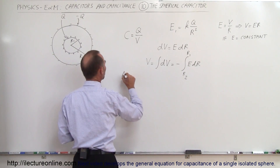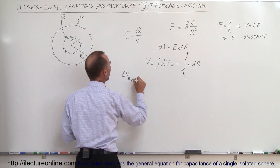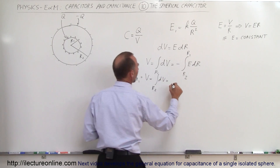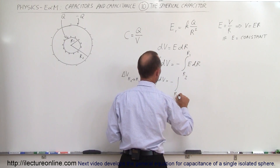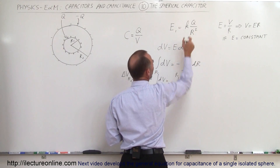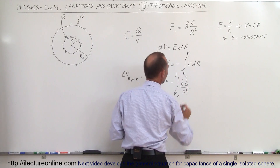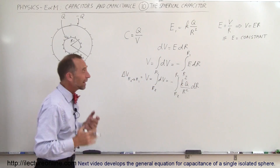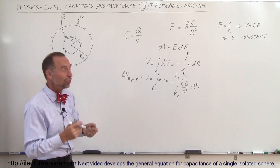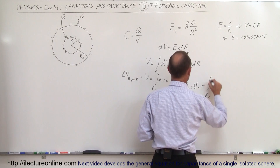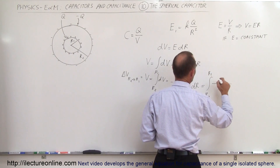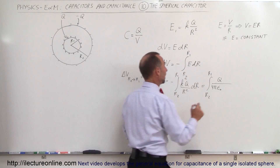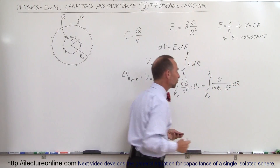So the change in potential, going from R2 to R1, which we define as V, equals the integral from R2 to R1 of dV, which equals minus the integral from R2 to R1 of E times dR. Substituting E equals KQ over R squared, and replacing K with 1 over 4π epsilon naught, this becomes minus the integral from R2 to R1 of Q over 4π epsilon naught times 1 over R squared dR.